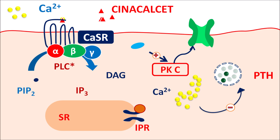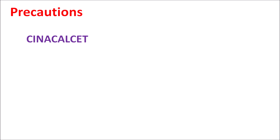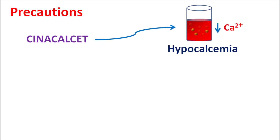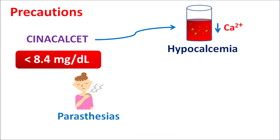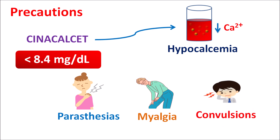In this way, Cinacalcet increases calcium signaling, thereby reducing the secretion of PTH. Now let us see the precautions of this drug. One important precaution is that since this drug controls calcium levels, its use may result in hypocalcemia — decreased calcium levels. Calcium may be reduced to less than 8.4 mg/dL. When calcium falls to this level, the drug can produce symptoms such as paresthesia, loss of sensation, myalgia, muscle pains, muscle cramps, and can also induce the risk of convulsions.